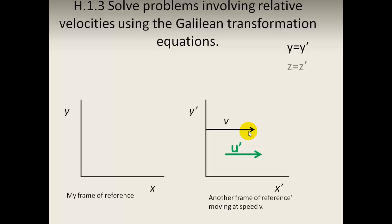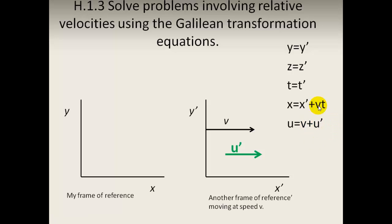We know that X equals X prime plus VT. So what will u be? My measurement of the velocity of the moving body — u — is going to be equal to the velocity u prime as measured in the other frame of reference, plus the velocity at which that frame of reference is moving away from me. So we simply add the velocities: the velocity of the frame of reference plus the velocity of that object in that frame of reference.